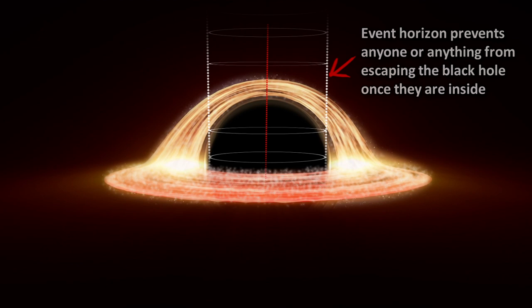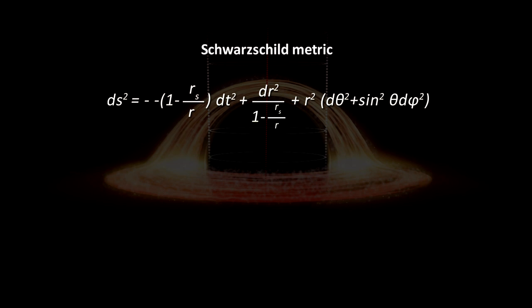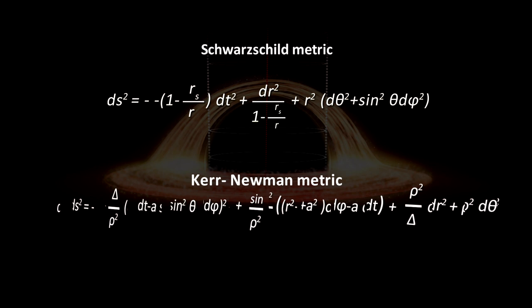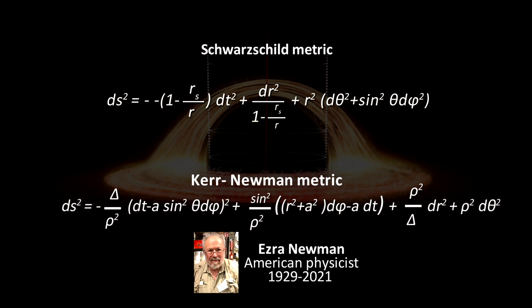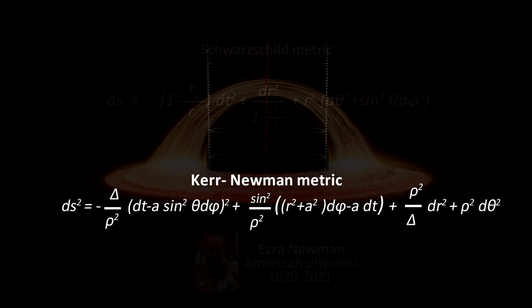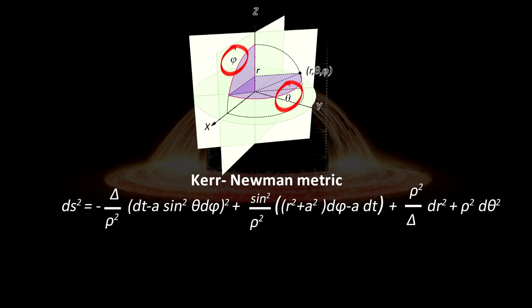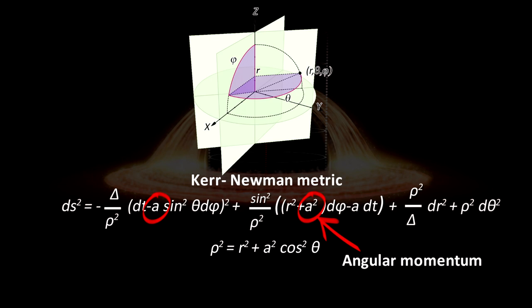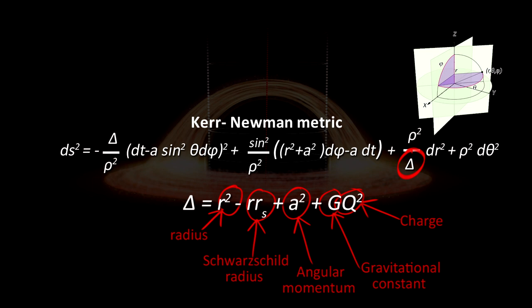In 1965 the Kerr Newman metric was described by Ezra Newman. This metric is even more complicated because it describes a rotating black hole. We can write the metric of this spacetime as shown here. The angles theta and phi are the same as in the Schwarzschild metric. A is the angular momentum, rho is a function of the radius angular momentum, and the angle theta. The delta is a function of the radius, the Schwarzschild radius, angular momentum, and Newton's constant of gravity. Q is the charge. Black holes can have a charge.